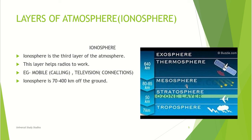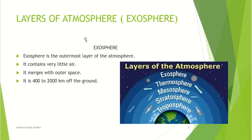The mesosphere is also known as the ionosphere — please don't get confused. Now, the exosphere: the exosphere is the outermost layer of the atmosphere. It contains very little air and merges with outer space. It is 400 to 2,000 kilometers off the ground, as you can see here.